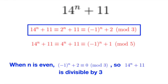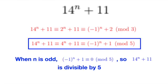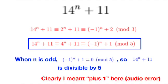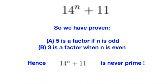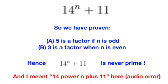Now, the only thing we need to do is to observe that, when n is even, minus 1 power n plus 2 is 0 modulo 3. While when n is odd, minus 1 power n plus 5 is always 0 modulo 5. This allows us to deduce that 14 power n has a factor of 3 when n is even and a factor of 5 when n is odd.